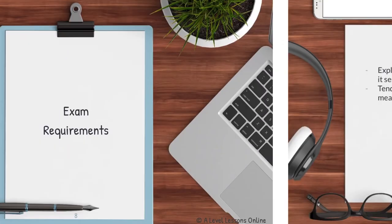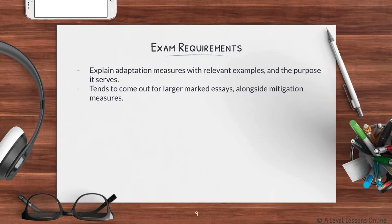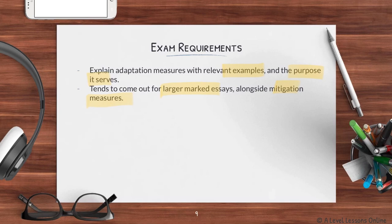For exam requirements, you need to explain adaptation measures with relevant examples, particularly green and gray measures. This topic tends to come up in larger mark essays alongside mitigation strategies. The bulk of any essay should be on mitigation, as not all effects of climate change have fully set in today, and as the saying goes, prevention is better than cure. Adaptation is always a secondary factor — it should not be the main focus of an essay on climate change.